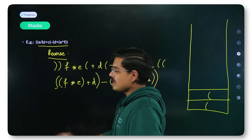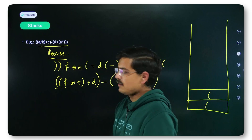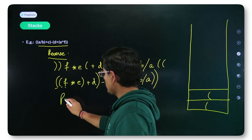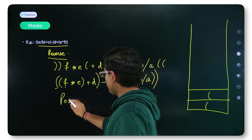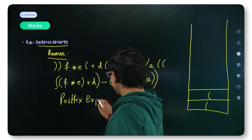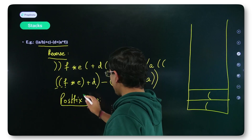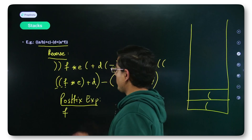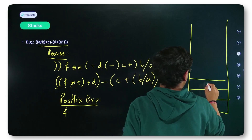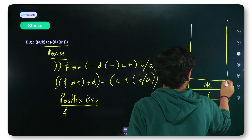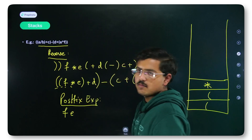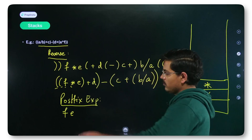As soon as you scan an operand, print it in the postfix expression. So F gets printed. Now comes the multiplication operator — push it onto the stack. Then comes E, again an operand, so it gets printed.